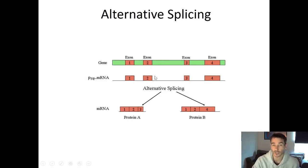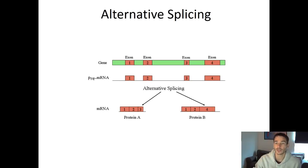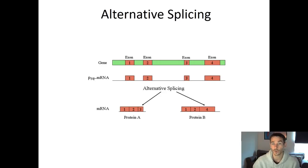This gives a cell the ability to make a higher variety of proteins from each gene depending on how it splices. You can splice it different ways and get different proteins after translation. This is why we only have about 30,000 genes but make upwards of 100,000 to 120,000 different proteins — on average, each gene codes for about three different proteins, meaning each gene can be spliced about three different ways on average.